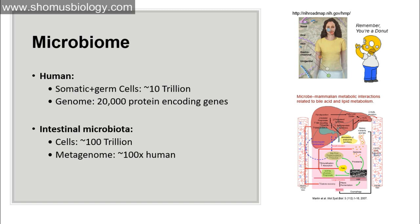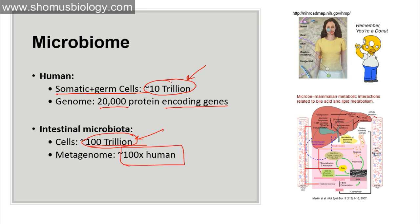Regarding the human microbiome: the human body has approximately 10 trillion somatic and germ cells with about 20,000 protein-encoding genes. The intestinal microbiota contains 100 trillion cells — 10 times more than the total human cells. The metagenome of intestinal microbiota is almost 100 times the human genome. Microbiota is found in the nasal cavity, oral cavity, skin, gastrointestinal region, and urogenital region, with the maximum found in the gastrointestinal tract.